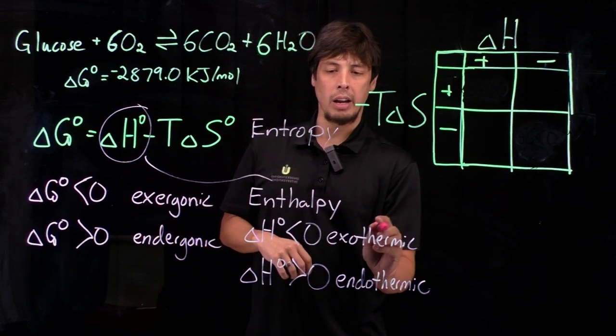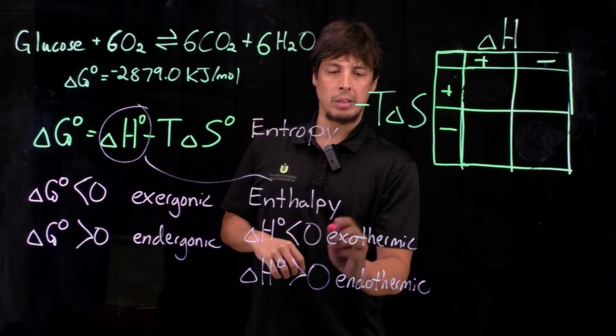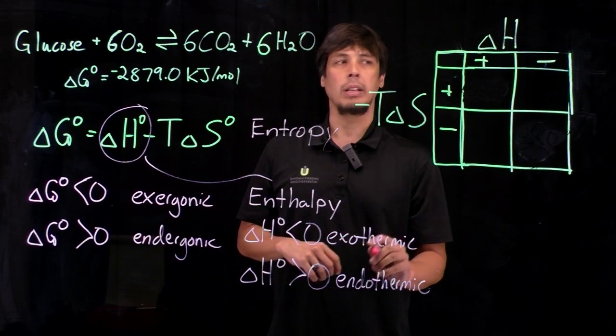So we know that delta H is going to be very high, and so that's going to be an exothermic reaction. Delta H is going to be negative.